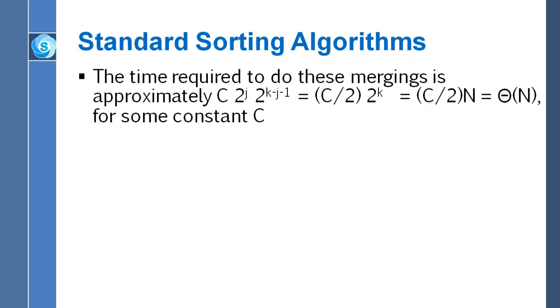In other words, capital theta of n. Capital theta of n expresses how much time it's going to take to do the mergings, all of the mergings that take you from one level of recursion up to the level above it. So that's interesting because that's independent of the level that you're talking about. It's independent of j.